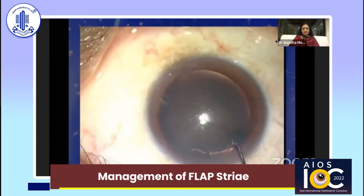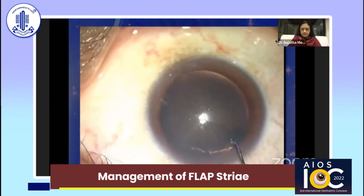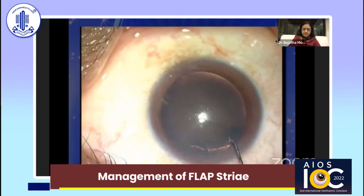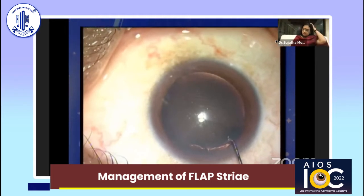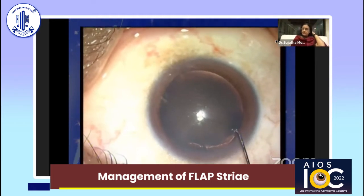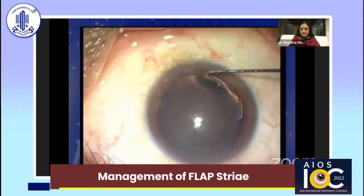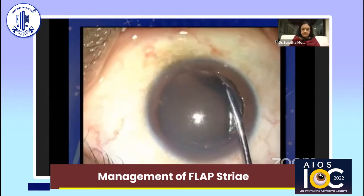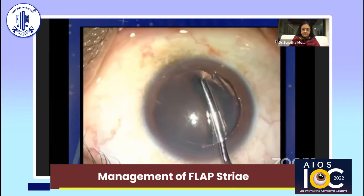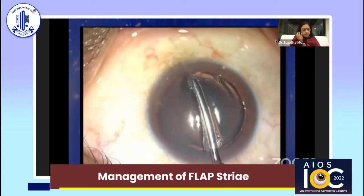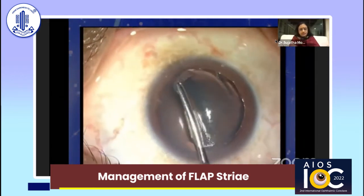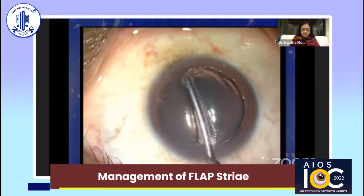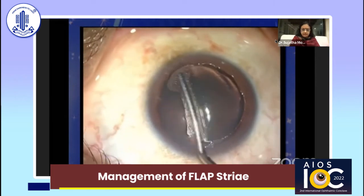In the first case, the pupil is dilated for a good transillumination effect on the striae. The flap margins are identified. The Sinski hook is used to break the epithelium. The flap is then lifted and floated on the bed.